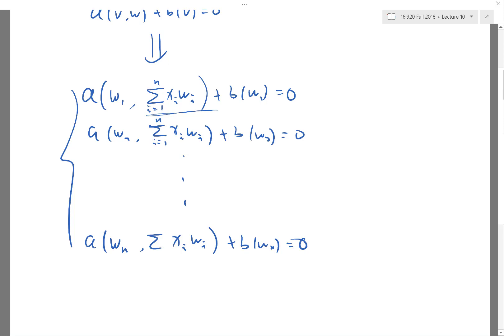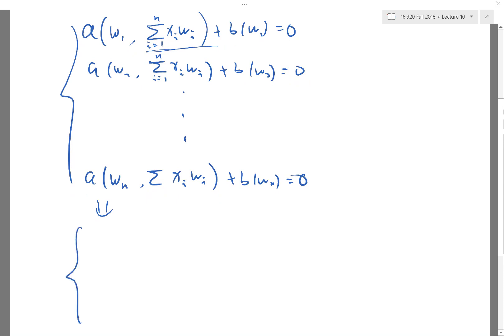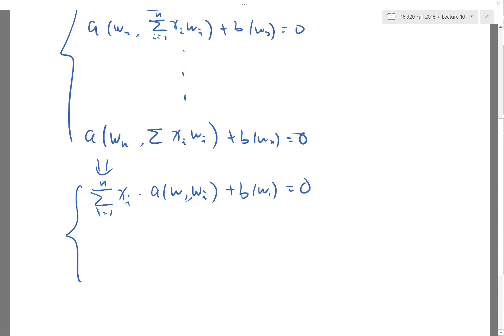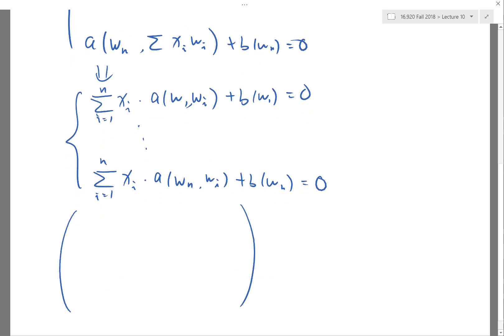We use the linearity of A with respect to the second argument. This is then converted into—I can pull the summation out: summation from i=1 to N of Xi times A(W1, Wi) plus B(W1) equals 0.